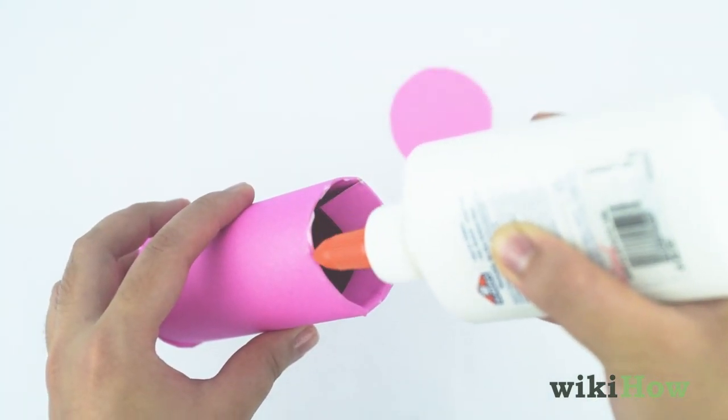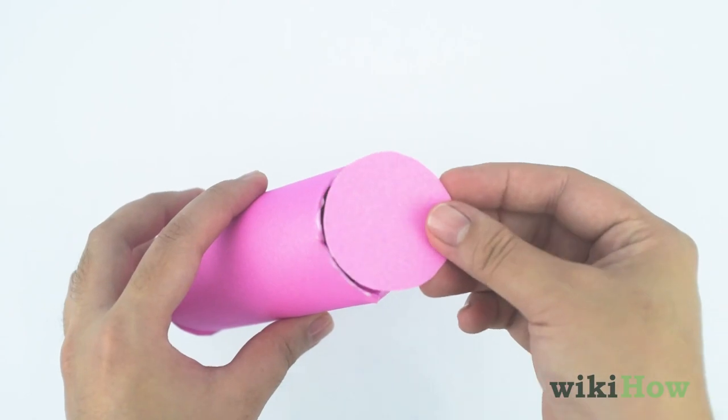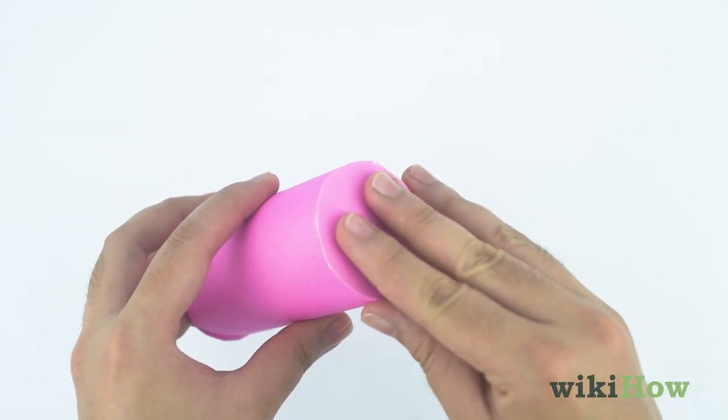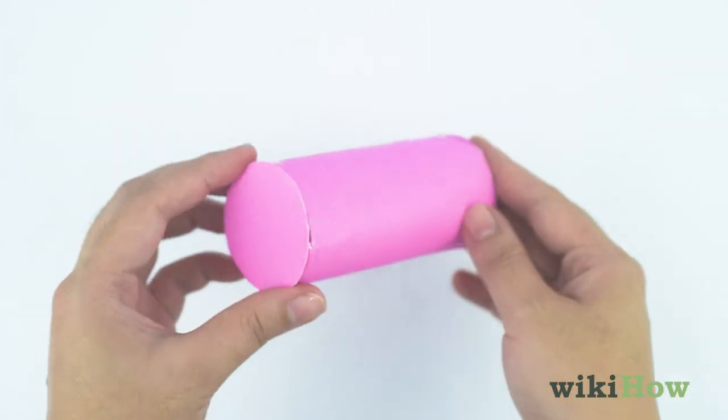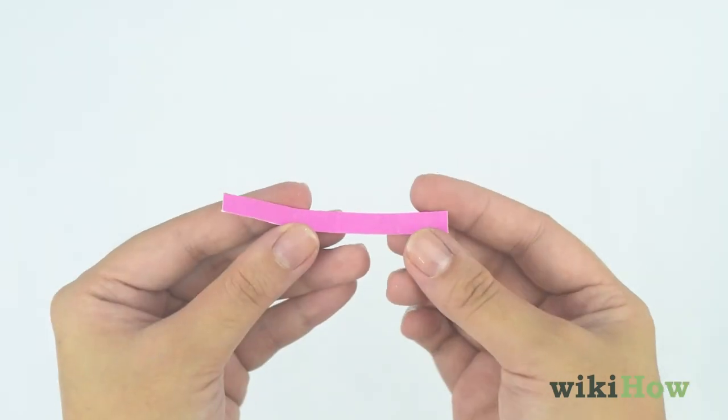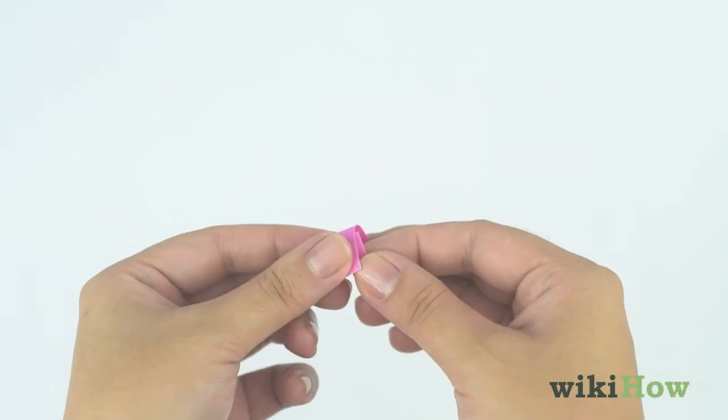Attach the circles to each end of the roll with glue. When both ends are securely in place, assemble and attach the nose to one of the circles.